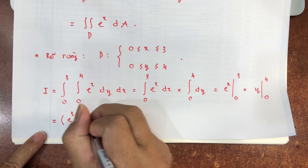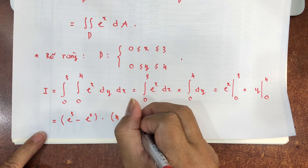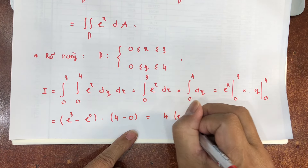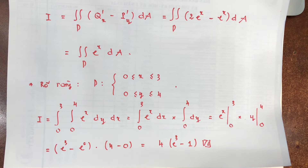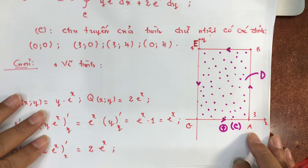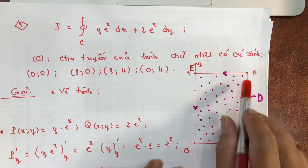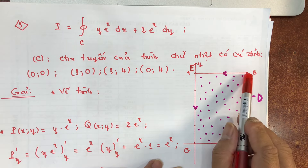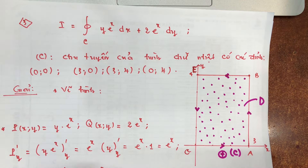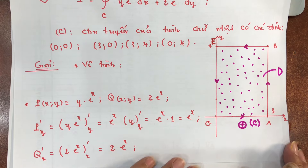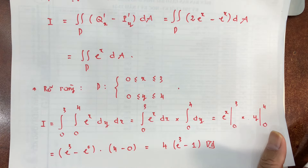Thay cận: (e³ − e⁰) × (4 − 0) = (e³ − 1) × 4. Đáp số: 4(e³ − 1). Nếu tính trực tiếp thì phải tính tích phân đường trên 4 cạnh OA, AB, BC, CO rồi cộng lại — chắc chắn dài hơn so với áp dụng công thức Green.